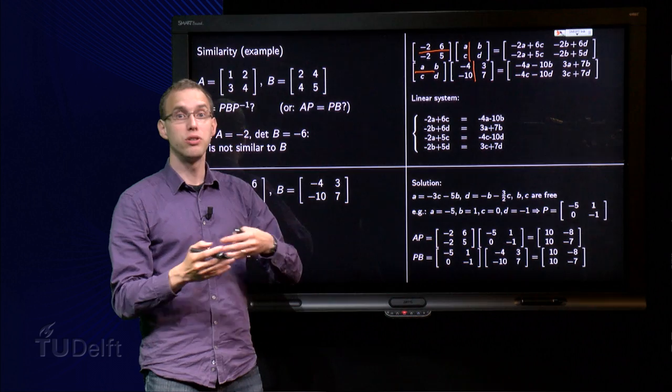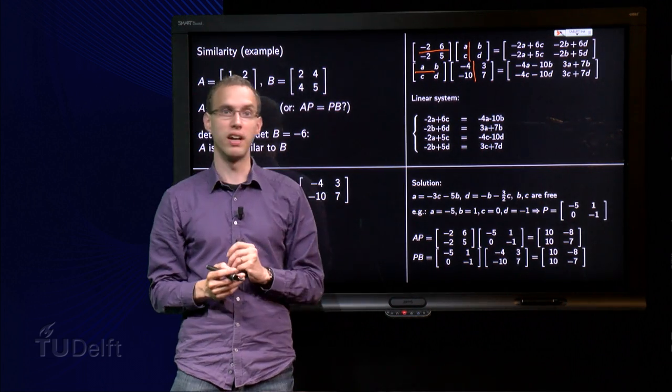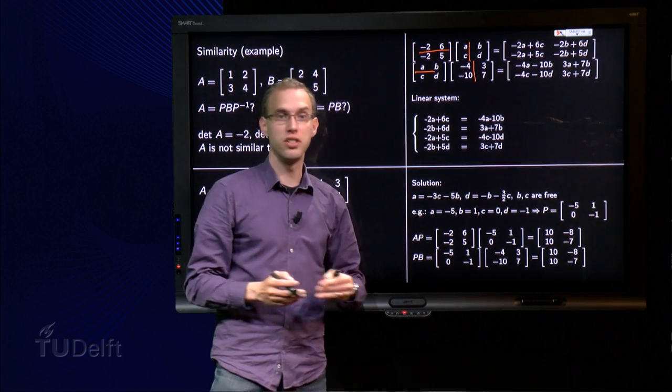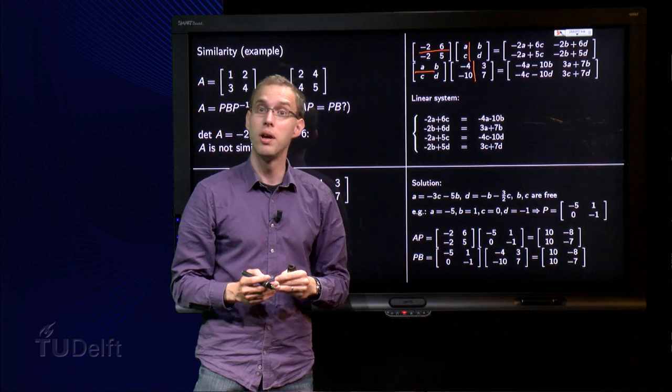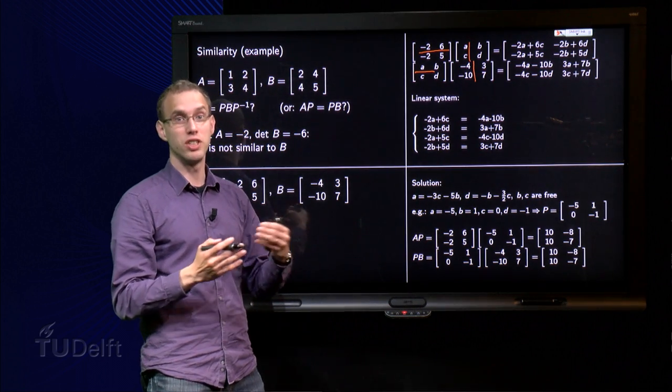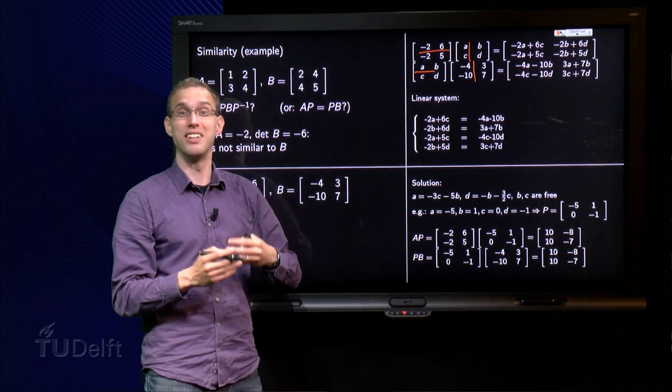And then I can try to make a choice, such that I find an invertible P over here. Of course I can take B and C are free, so I can take them zero, then A and D are also zero, but that would yield the zero matrix, which is not invertible, so let's make another choice and try to find an invertible P.